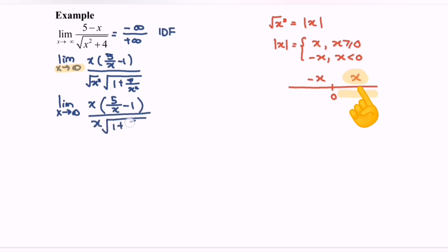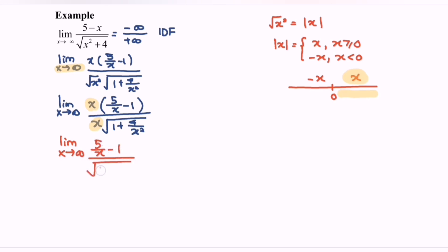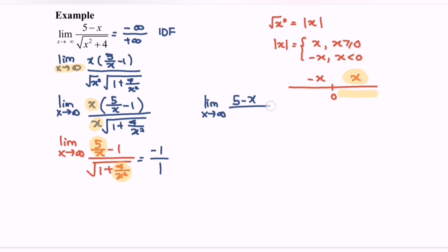So the limit when x approaches positive infinity is x times (5 over x minus 1) over x times the square root of (1 plus 4 over x squared). Simplifying the common terms, we get the limit when x approaches positive infinity of (5 over x minus 1) over the square root of (1 plus 4 over x squared). Substituting, we have 0 for the 5 over x term and 0 for the 4 over x squared term, giving negative 1 over 1. Therefore the limit when x approaches positive infinity for (5 minus x) over the square root of (x squared plus 4) equals negative 1.